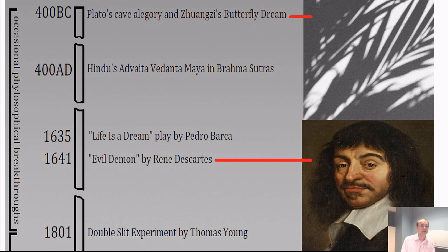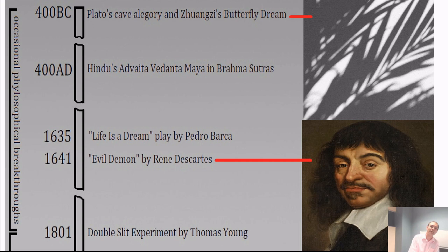Then there is a long jump all the way to 1635 and the first play — not novel — by Pedro Calderón de la Barca called 'Life is a Dream,' which also documents the idea of us living a dream and there being no defined difference between dream and reality. It's very hard to separate those two. I call this period on the left 'occasional philosophical breakthroughs.' This long period in human history is when a lot of smart visionaries thought about this concept and produced papers, books, or plays.